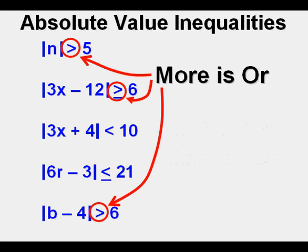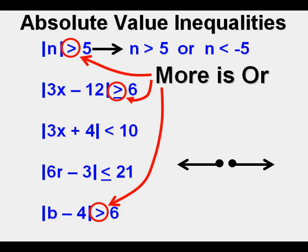More means greater than, so of these problems, these three will be ORs. For this first one, it will turn into: n is greater than 5, or n is less than negative 5 — that's the OR. When graphed, the OR will likely be two boundary points with arrows going to negative and to positive infinity.